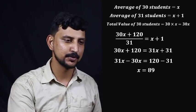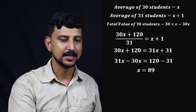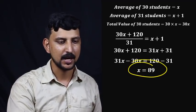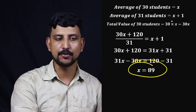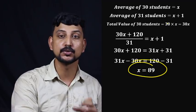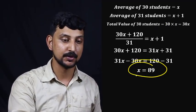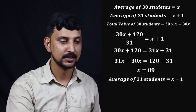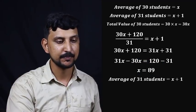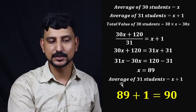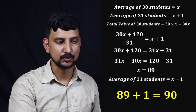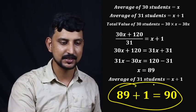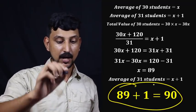31x minus 30x is equal to 89. So x equals 89. We have the average of 30 students as 89, and 89 plus 1 gives us 90. So the new average of 31 students is 90.